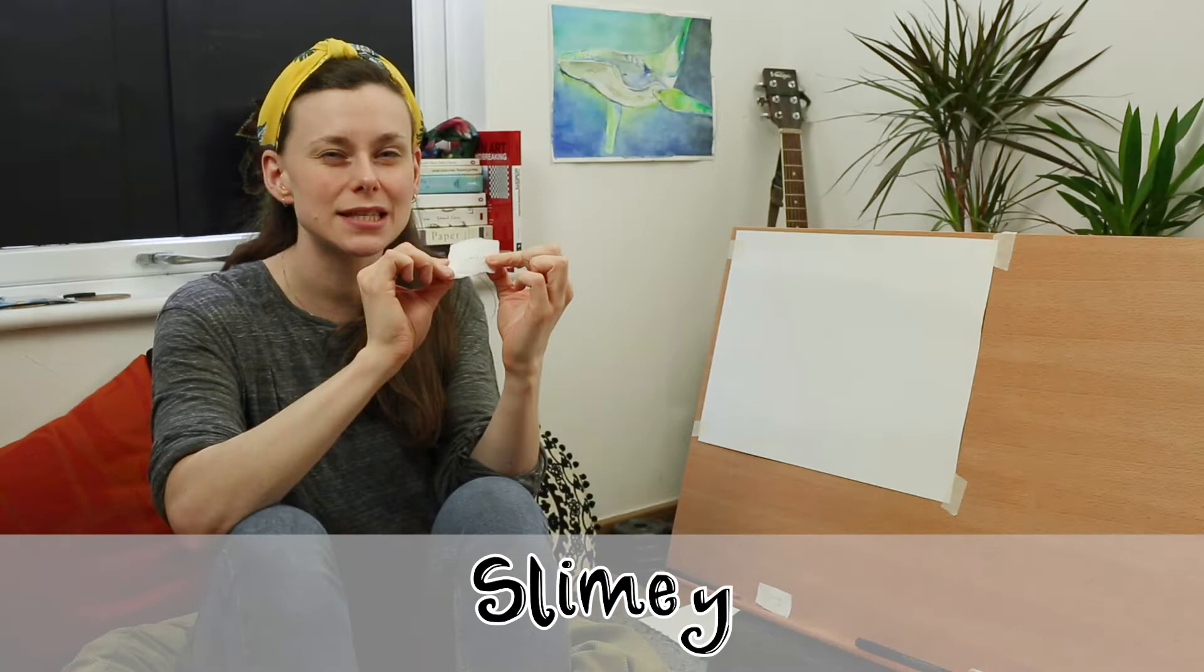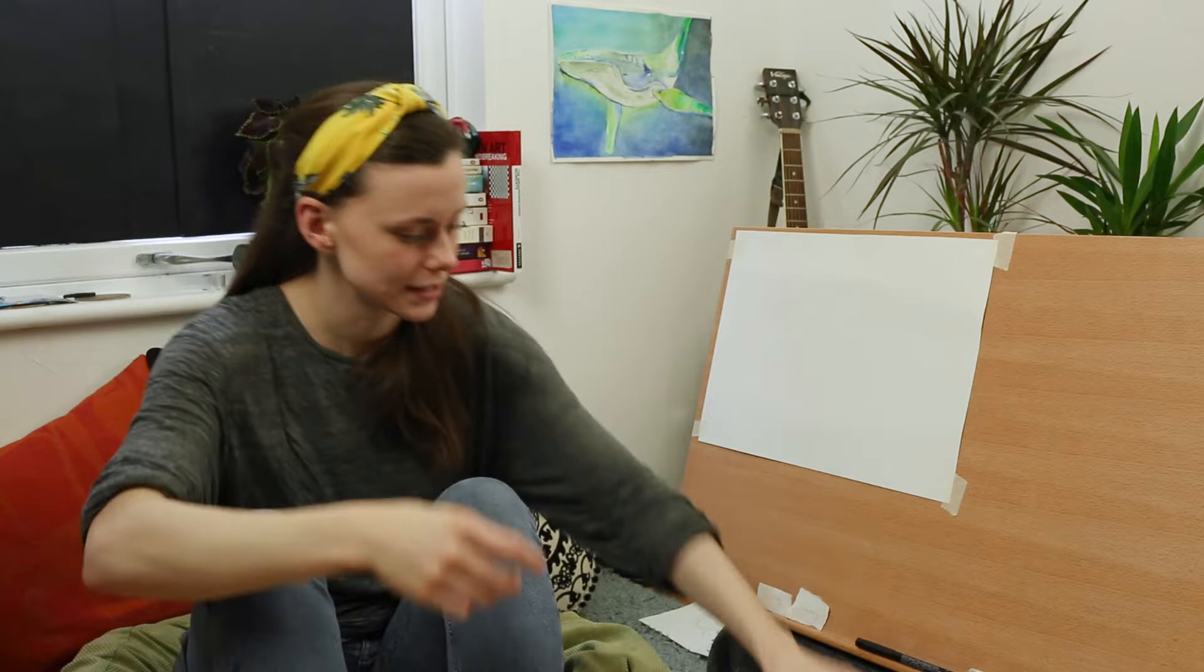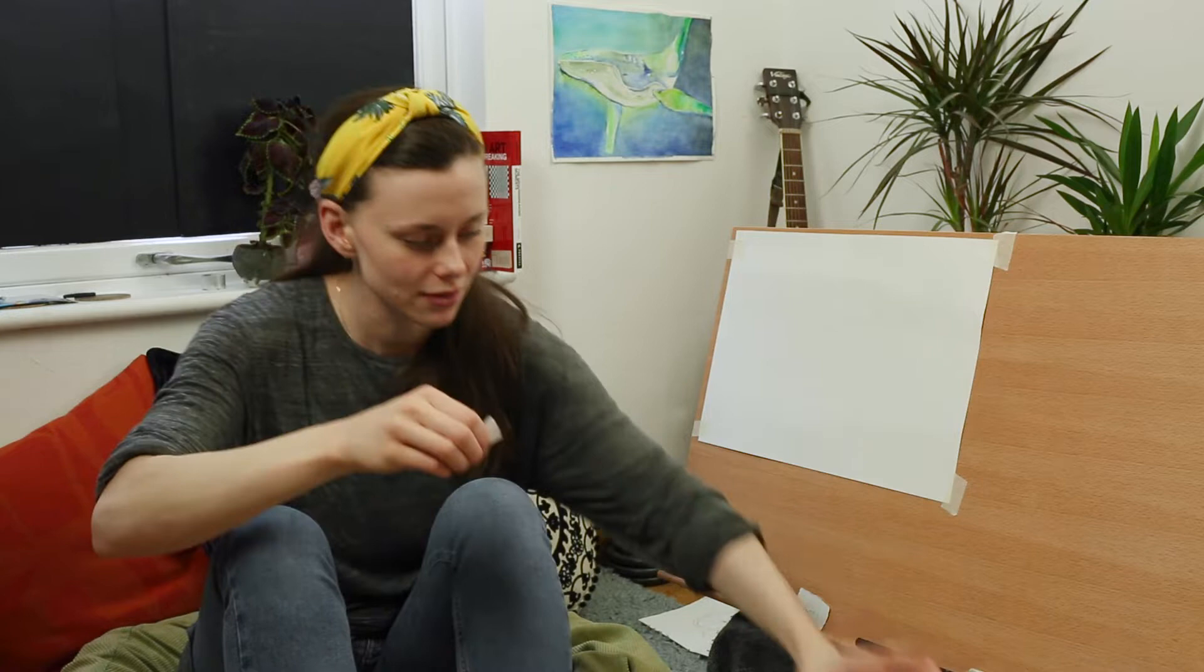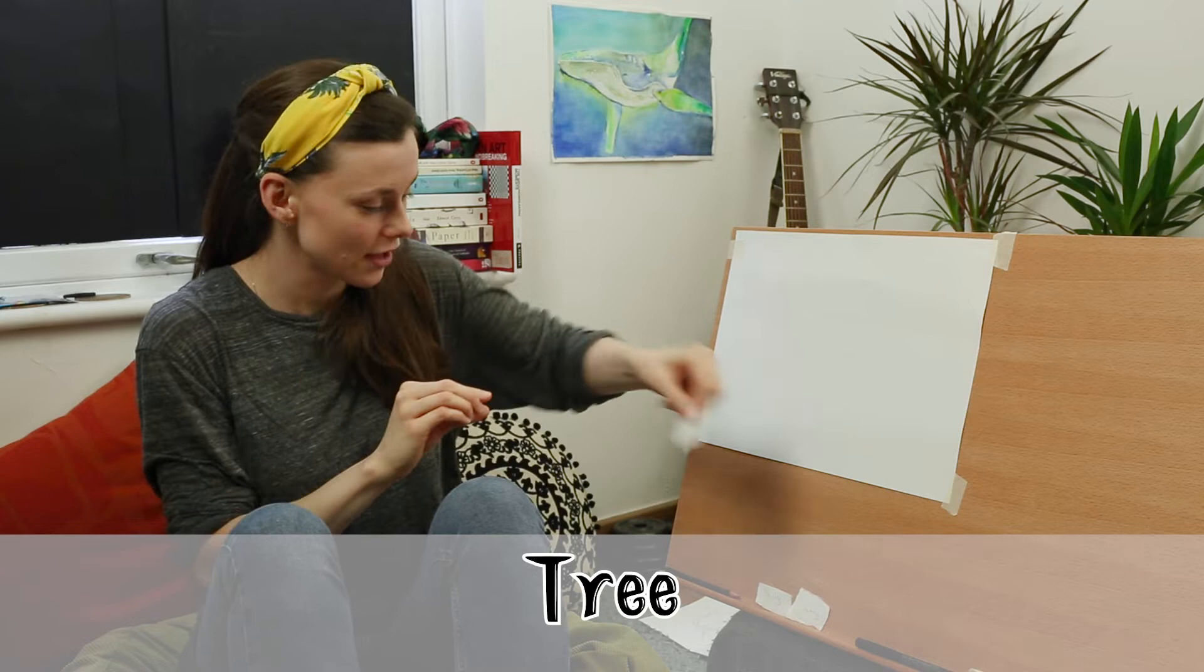So something has to be slimy and cycling, which will be interesting. Not two words that I tend to put together. And our third one is a tree. So we have to have these three words in our image.